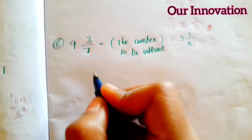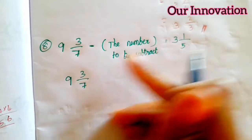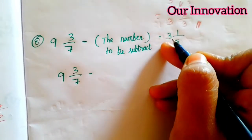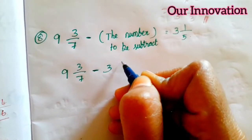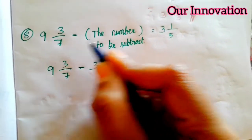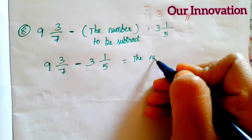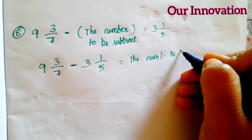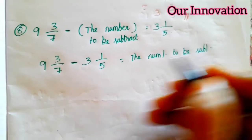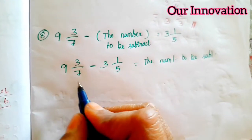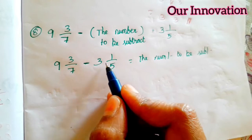So we don't know it. So what are we to do? 9 and 3 by 7. This fraction we will give here. So minus — here there is a plus, so when it comes over, minus becomes plus. 3 and 1 by 5. So here minus; the number to be subtract comes over. So the number to be subtracted equals 9 and 3 by 7, minus 3 and 1 by 5.